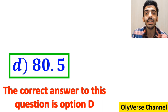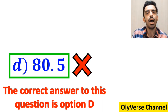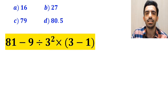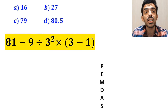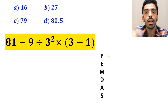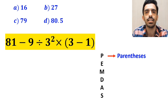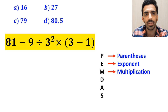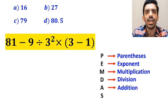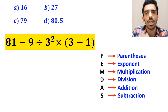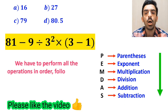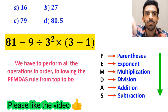However, this answer is absolutely wrong. Now let me show you how to solve this expression properly. To solve this problem, we must follow the PEMDAS rule. In this rule, P stands for parentheses, E stands for exponent, M stands for multiplication, D stands for division, A stands for addition, and S stands for subtraction. It means we have to perform all the operations in order following the PEMDAS rule from top to bottom.